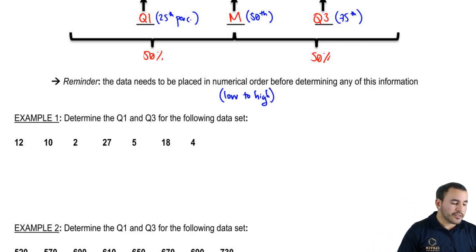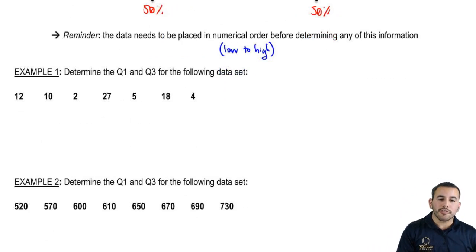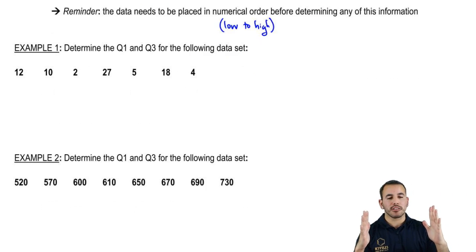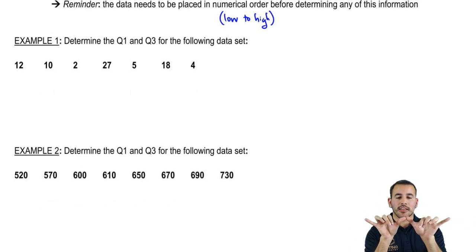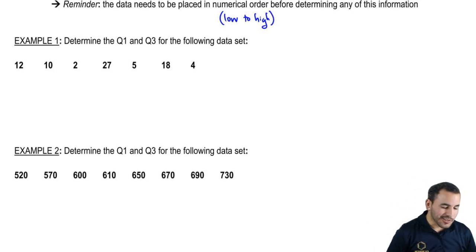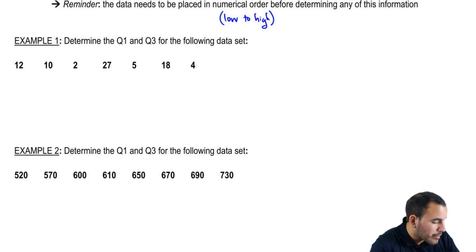Determine the Q1 and Q3 for the following data set. In order to get Q1 and Q3, first we have to break up our data in half. Once you break it in half, then we can break those corresponding halves in half again. So let's go ahead and get our median.